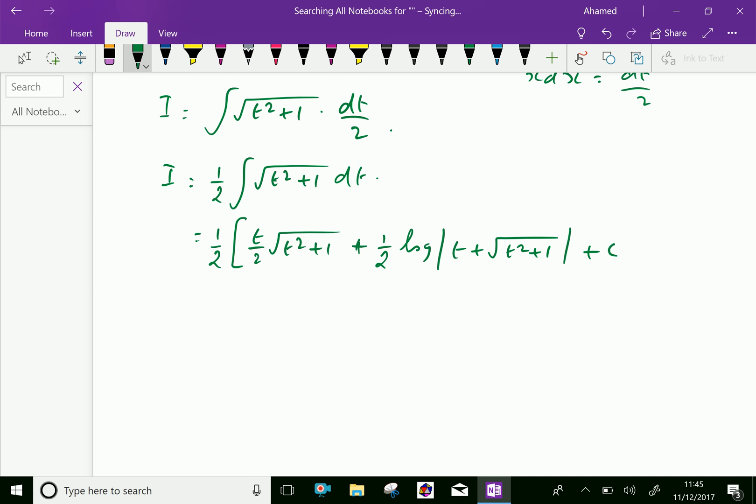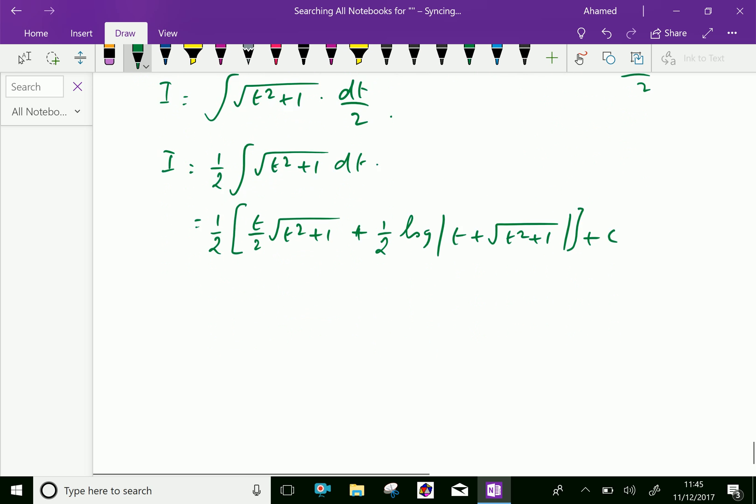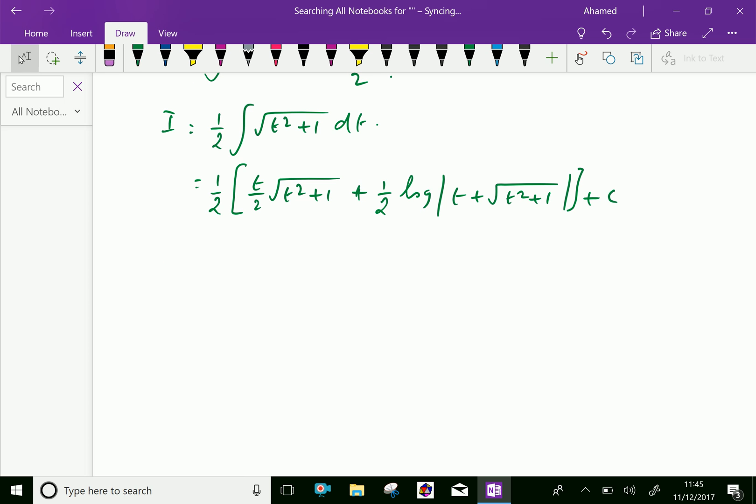Now let us apply the value of t that we substituted: t equals x squared. Here, therefore, I equals x squared over 2 times the square root of x to the power 4 plus 1.